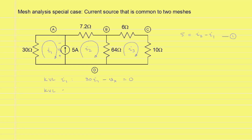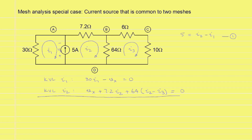We will write KVL for the mesh defined by the current I2. This time we have a voltage drop of Vx. Voltage drops are given with a positive sign. We write down plus Vx, plus another voltage drop of 7.2 I2, and finally another voltage drop of 64 times I2 minus I3, and this must be equal to zero to satisfy KVL. We can add these two KVL equations to eliminate Vx, and we will get 30 I1 plus 7.2 I2 plus 64 times I2 minus I3 is equal to zero.